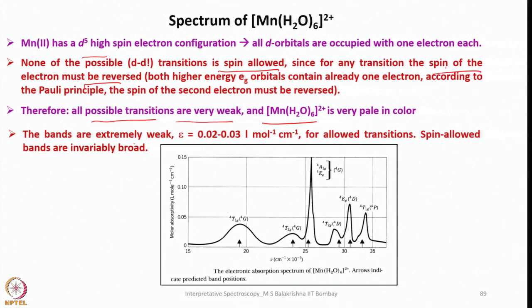Therefore, all possible transitions are very weak and hence hexa-aqua manganese 2+ is very pale in color. The bands are extremely weak, reflected in its epsilon value of 0.2 to 0.03 liter per mole per centimeter. All transitions, spin allowed bands are invariably broad. You can see here these are the transitions observed for hexa-aqua manganese 2+. These arrows indicate the position of the predicted band positions.